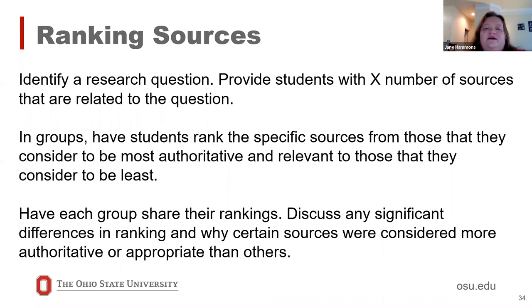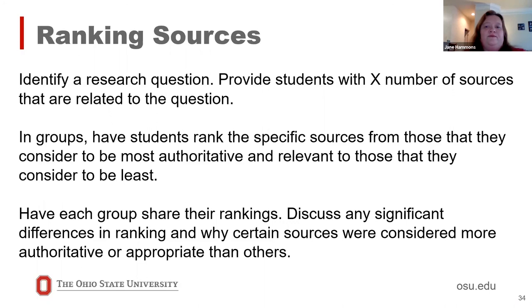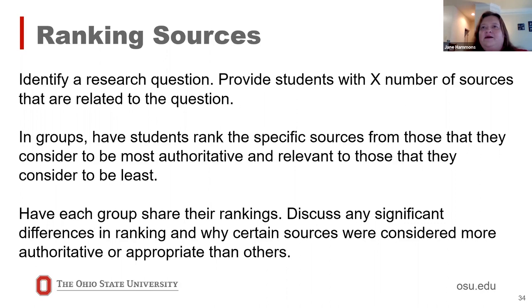A similar activity would be giving students actual sources — links to five or so sources, a mix of websites, journal articles, and ebooks — then identifying a particular research question and having students rank the sources from most to least authoritative, discussing how they came up with those rankings and why they felt certain sources were more authoritative than others. Then comparing any disagreements among groups — we thought this was a really great source and we didn't — and having them discuss why.